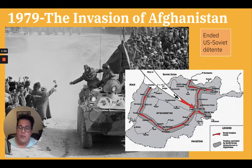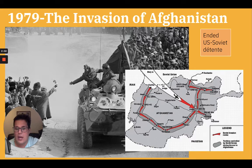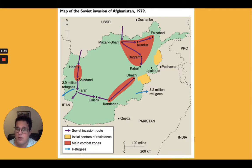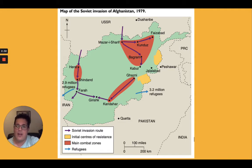Key for this time period is the invasion of Afghanistan in 1979, which finally ended U.S.-Soviet détente because it was an outright move against the U.S. in the Middle East. This map shows the Soviet invasion of Afghanistan, including how refugees moved — 2.9 million refugees moving away from the major cities — with zones of main combat, initial centers of resistance, and intervention by both the USSR and the U.S.